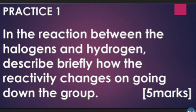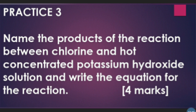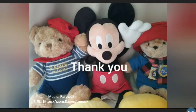Let's do some practice. In the reaction between a halogen and hydrogen, describe briefly how the reactivity changes on going down the group. Given the equation for the reaction between cold dilute potassium hydroxide solution and chlorine, explain by working out oxidation states why it is a redox reaction. Name the products and write the equation for the reaction between chlorine and hot concentrated potassium hydroxide solution. Thanks for watching and have a nice day.